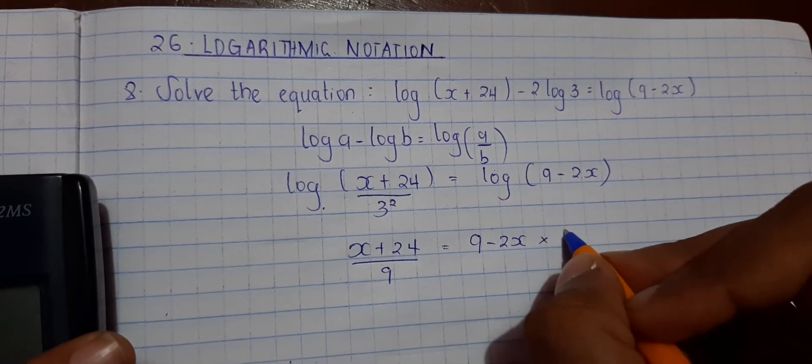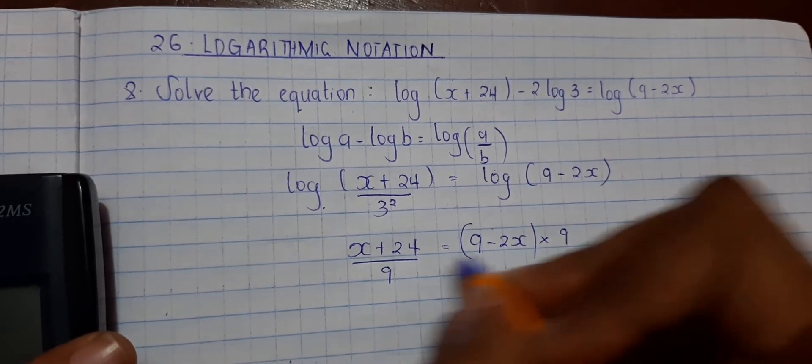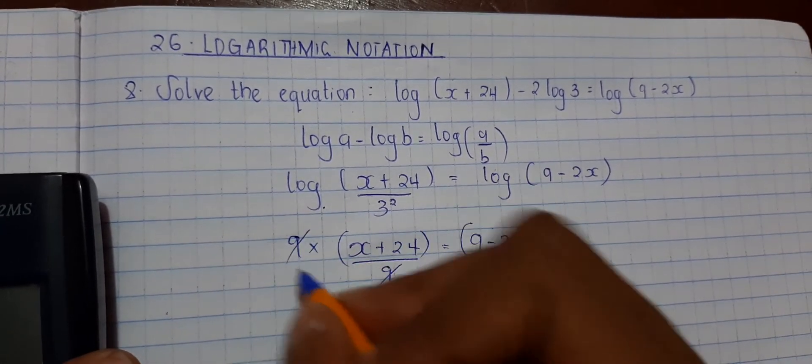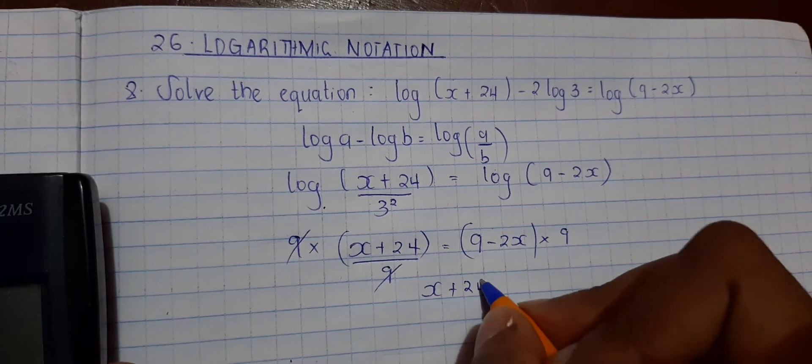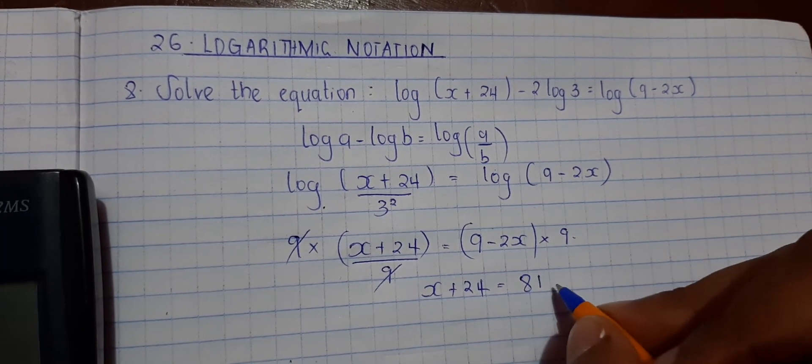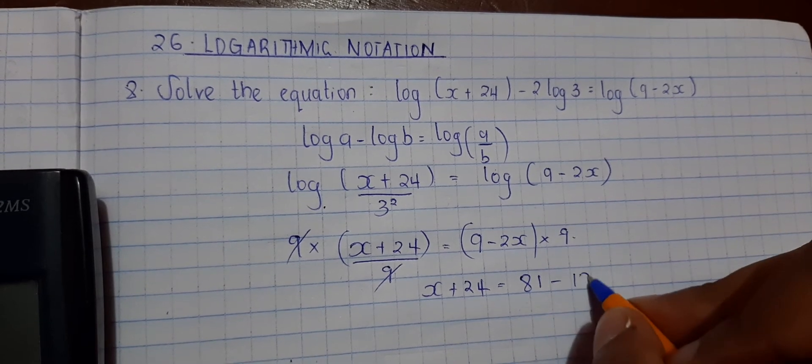So we cross multiply, times 9 on both sides. x plus 24 is equals to 9 times 9, which is 81, minus 9 times 2, which is 18x.